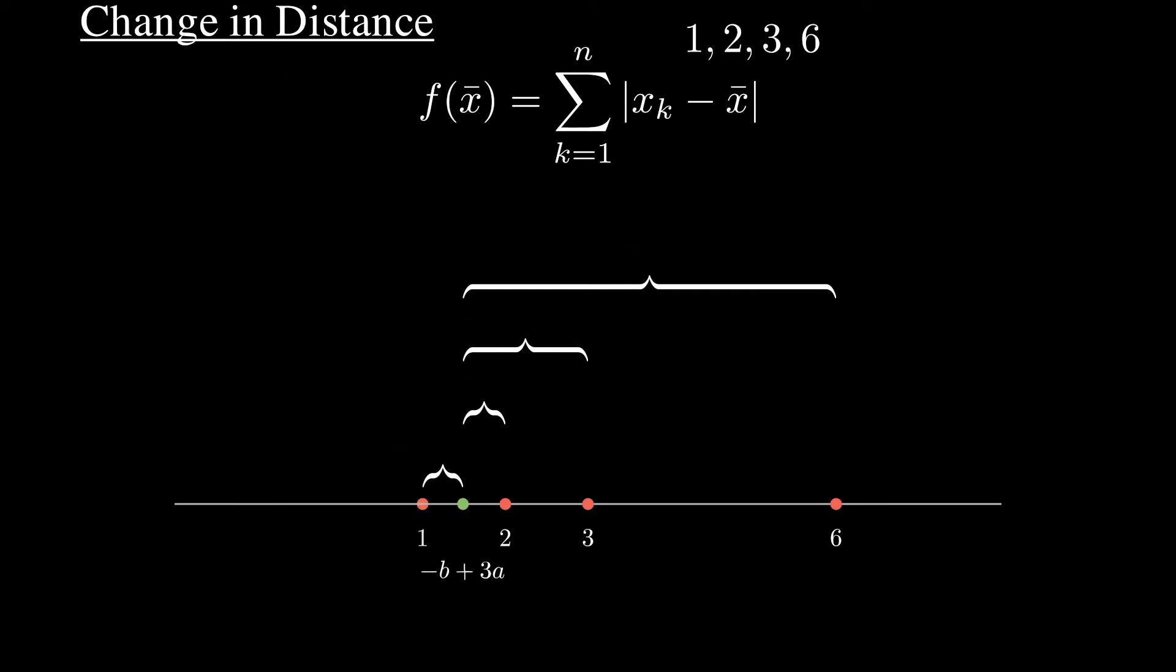Let's add a again. Now, the distance from one increases by a, but the distance to the other three points decreases by a. This gives us a net gain of negative 2a.